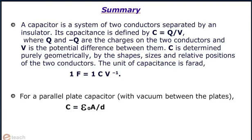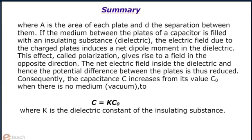For a parallel plate capacitor with vacuum between the plates, C equals epsilon naught A by D, where A is the area of each plate and D the separation between them.